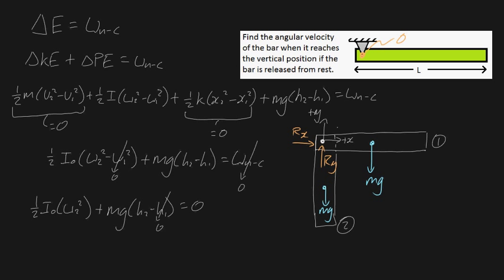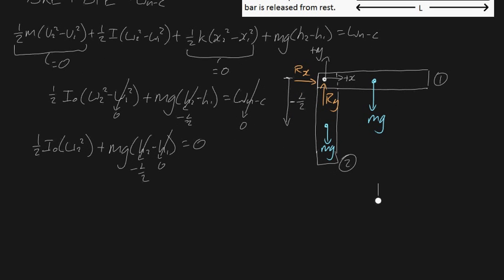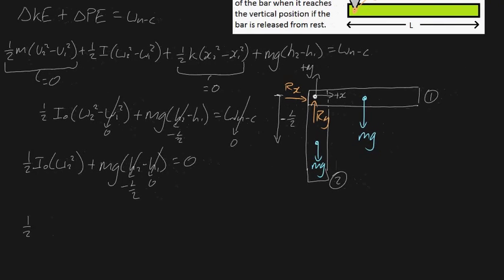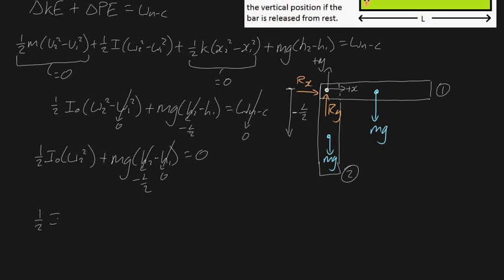Substituting, we get: one-half I_O ω2² + mg(-L/2) = 0. Now we need I_O. For a rod rotating about its center of mass, I = (1/12)mL². Using the parallel axis theorem, I_O = I_cm + md², where d = L/2. So I_O = (1/12)mL² + m(L/2)² = (1/12)mL² + mL²/4 = mL²/3. That is the moment of inertia around the pin at the very end of the bar.